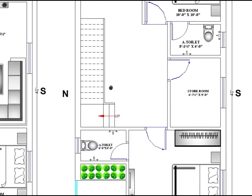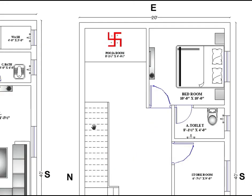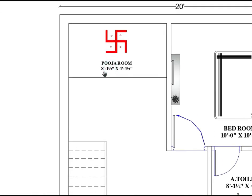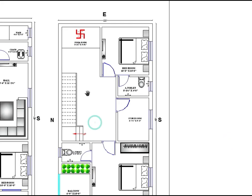Now entering the upper floor, here is the Pooja area towards the distant direction. The Pooja area is 8 feet 1 inch by 4 feet 4 inches — horizontally 8 feet and vertically 4 feet 4 inches. Here is a proper circulation space provided.